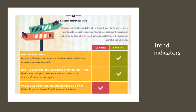Trend indicators measure the direction and strength of a trend using some form of averaging to establish a baseline. Most trend indicators are lagging because they use market data that has already happened for their calculations. The most important trend indicator is the moving average. My personal favorite — and I use indicators mostly as interpreters when I can't see a clear picture — is MACD, which is also a lagging indicator.